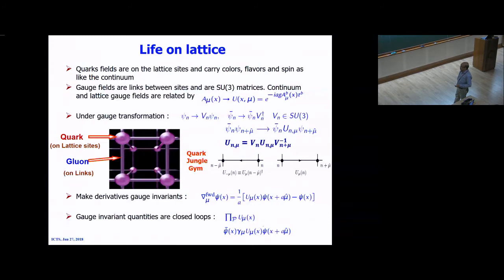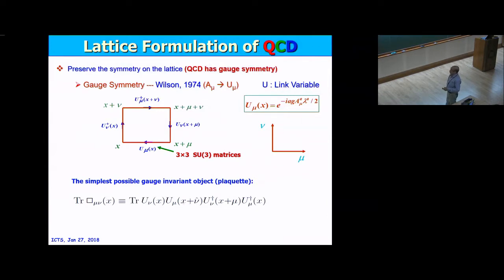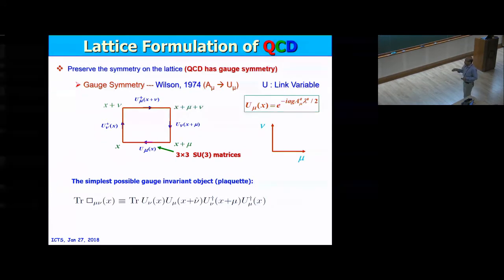You can write the gauge action in terms of gauge invariant objects. Wilson showed that if you write a plaquette — you tie all the links together and come back to the original position. These are all gauge links, each an SU(3) matrix. If you take the trace of that, it is a gauge invariant object — this is the plaquette. With that, one can write down a gauge action. The question is whether that will be your QCD action, but one can try various types of these gauge invariant loops and see which ones go to the QCD action in the continuum limit.